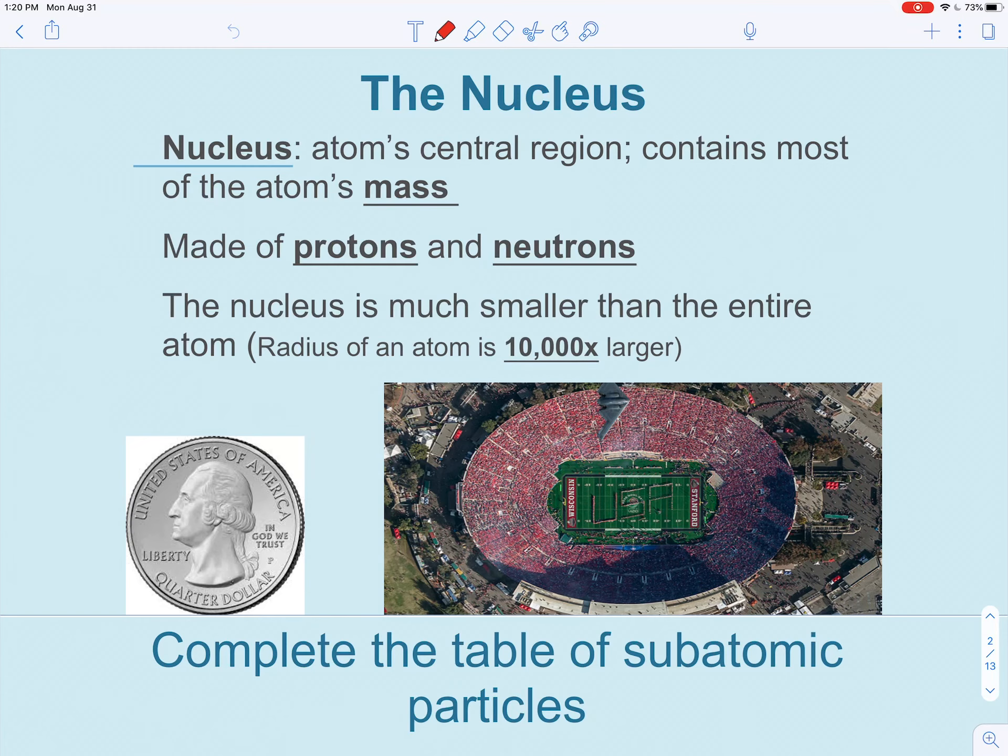So the nucleus is going to be our atom's central region, that's the center, and it contains most of the atom's mass. That's going to be important. It's made of protons and neutrons, so both the protons and neutrons are going to make up most of the atom's mass.